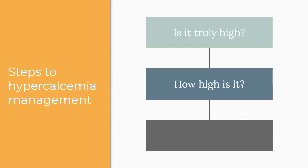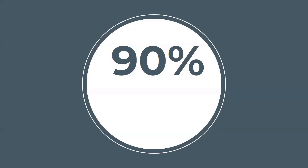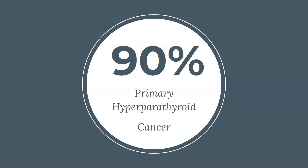Step three: two causes. Over 90% of all hypercalcemia cases come from two things. Number one is primary hyperparathyroidism — that's your top cause across the board. Number two is cancer. So you really should not dismiss high calcium. Ninety percent from hyperparathyroid and cancer — pretty straightforward. Three steps and the top two diagnoses.